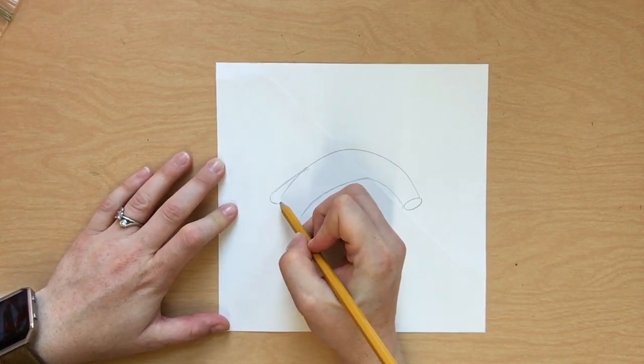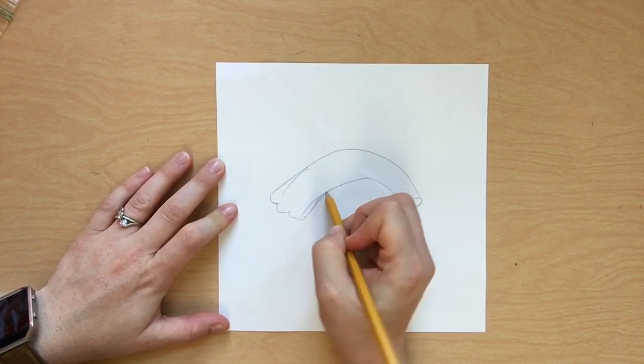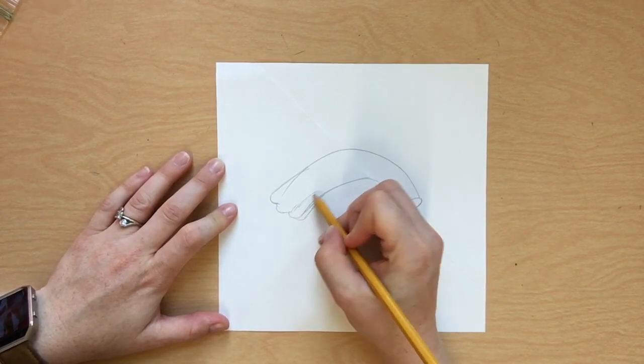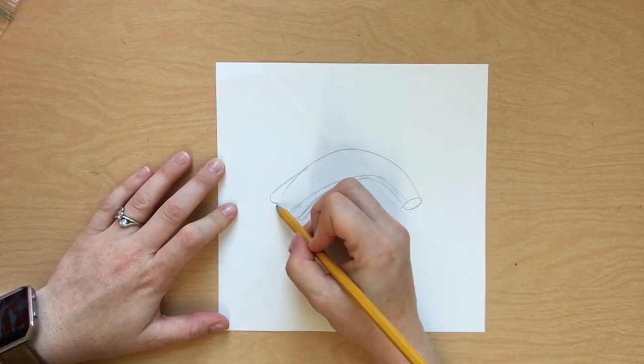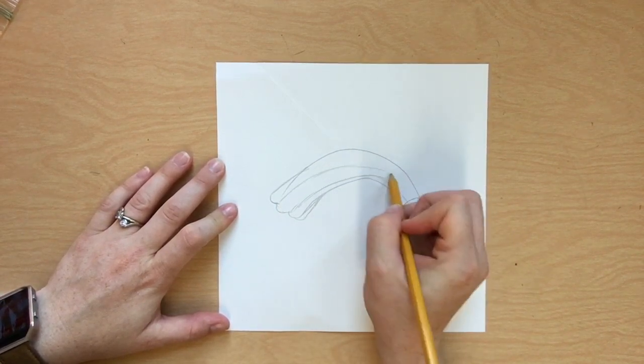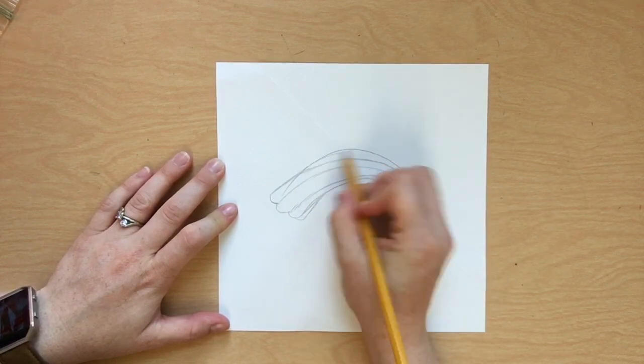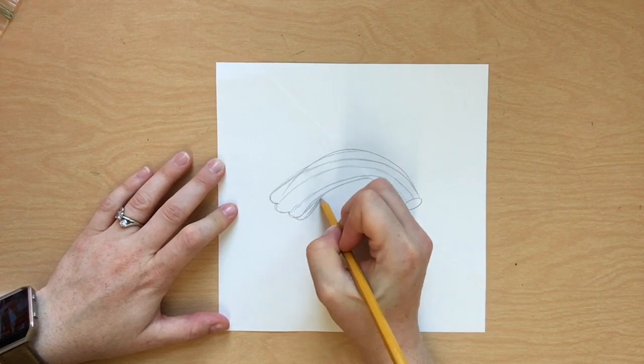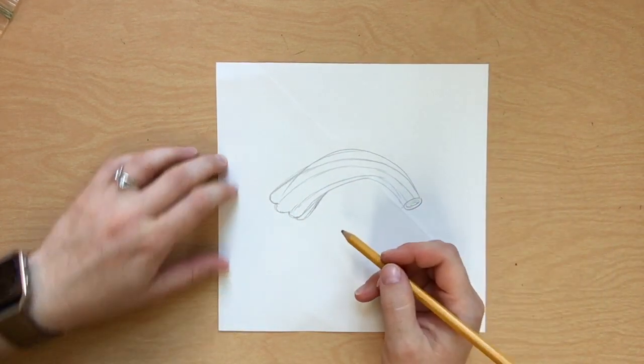The part that attaches to the pumpkin is a scalloped line, kind of a curvy one. Then we'll use our pencil to lightly sketch in some more curved lines leading towards the oval at the end. This will give that great texture that you see on a stem. Feel free to play around. Add some lighter and darker lines in there. You can even kind of shade in the end.